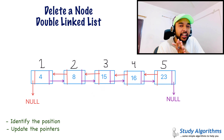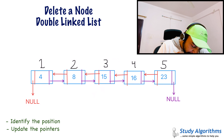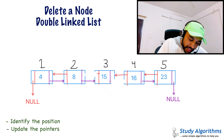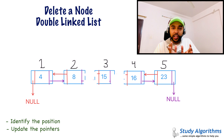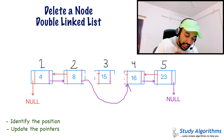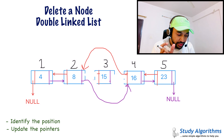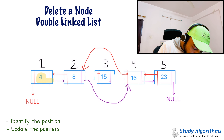To delete a node from the very end, travel to the end of the list, identified by the node whose next is null. Once at that node, set its previous to null. Then remove the next pointer of the second-to-last node (node 16) and set it to null. The last node has been deleted. Traversing from node 8 you find 15, then 16, then null — meaning 16 is now the last node and node 23 no longer exists.